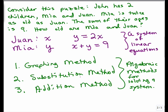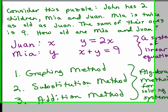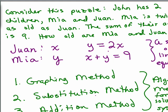What we're going to do is try to find out what X and Y are. What we're really trying to find out is an ordered pair that is a solution to the first equation, Y equals 2X, and also an ordered pair that is a solution to the second equation, X plus Y equals 9.